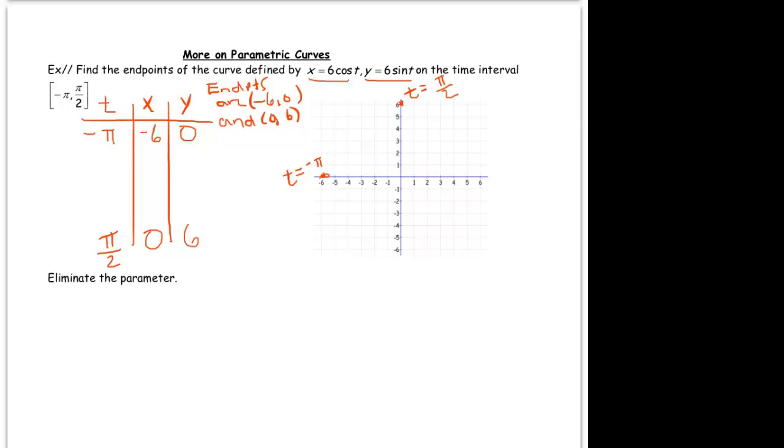So in between negative pi and pi over 2, I'm going to pick nice convenient values for t which will indicate what's happening in between. What is this curve actually going to look like? If we imagine a particle tracing it, where does it go? We plug in negative pi over 2: 6 times cosine of negative pi over 2 gives you 0, and 6 times sine of negative pi over 2 is negative 6. 6 times cosine of 0 is 6.